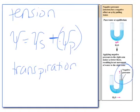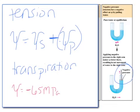The water potential of air is approximately negative 65 megapascals. Water moves from a higher water potential to a lower, more negative water potential. So if the water potential of the air outside the plant is negative 65 megapascals, that is probably more negative than the inside of the plant. The water will move toward that more negative situation, which will actually help move water up the plant — that's how transpiration works.